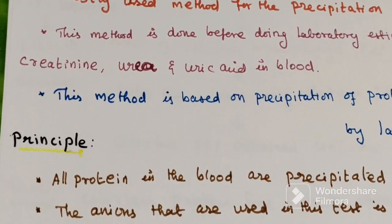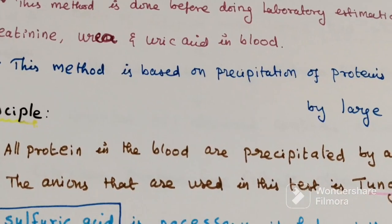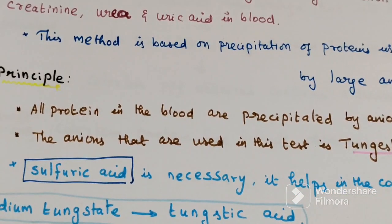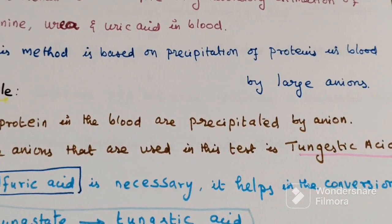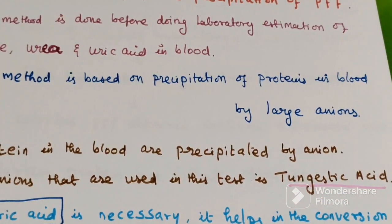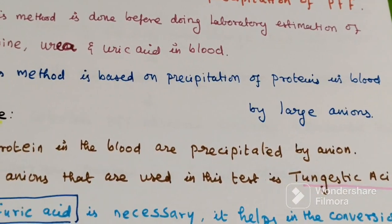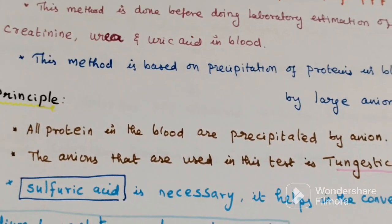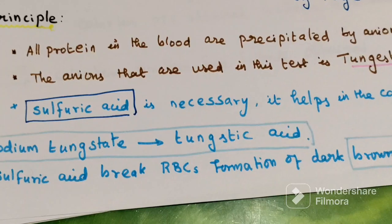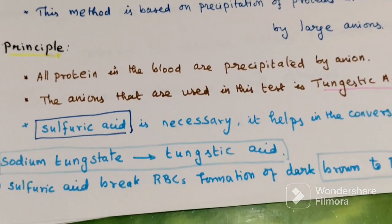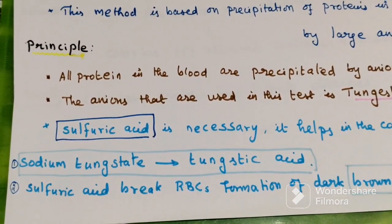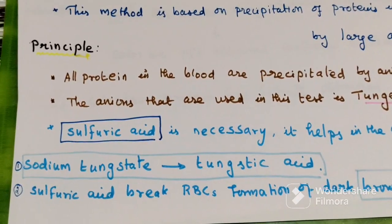Principles of protein free filtrate: all proteins in blood are precipitated by an anion. The anion used in this test is called tungstic acid. Here we are using tungstic acid as the anion. Sulfuric acid is also necessary in this test.